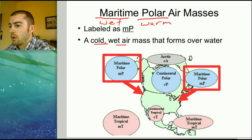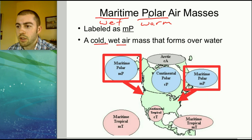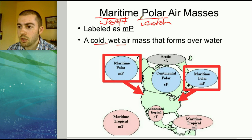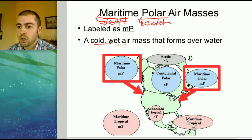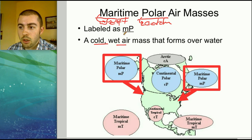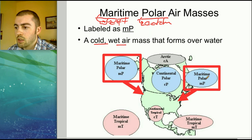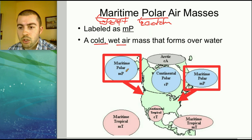The next type is maritime polar. Maritime tells us it's going to be wet, and polar tells us it's going to be cold — so a maritime polar air mass will be a cold, wet air mass. The abbreviation is lowercase m, uppercase P. These form over the northern Pacific or northern Atlantic Ocean and usually bring cold weather, maybe snow or precipitation in winter, or cold rainy weather in summer.